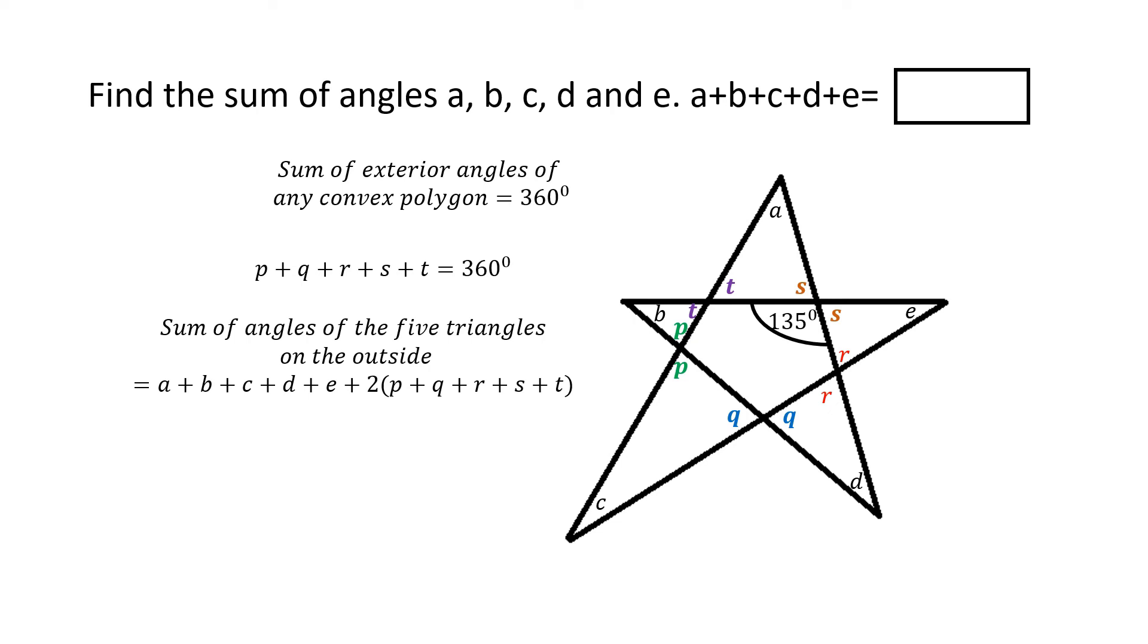We know that the sum of the angles of any one triangle is 180 degrees. So the sum of angles of five triangles taken collectively will be 5 multiplied by 180 degrees. We can write this, that A plus B plus C plus D plus E. And notice that I have replaced P plus Q plus R plus S plus T by 360 degrees, because that's the sum of the exterior angles of the pentagon.